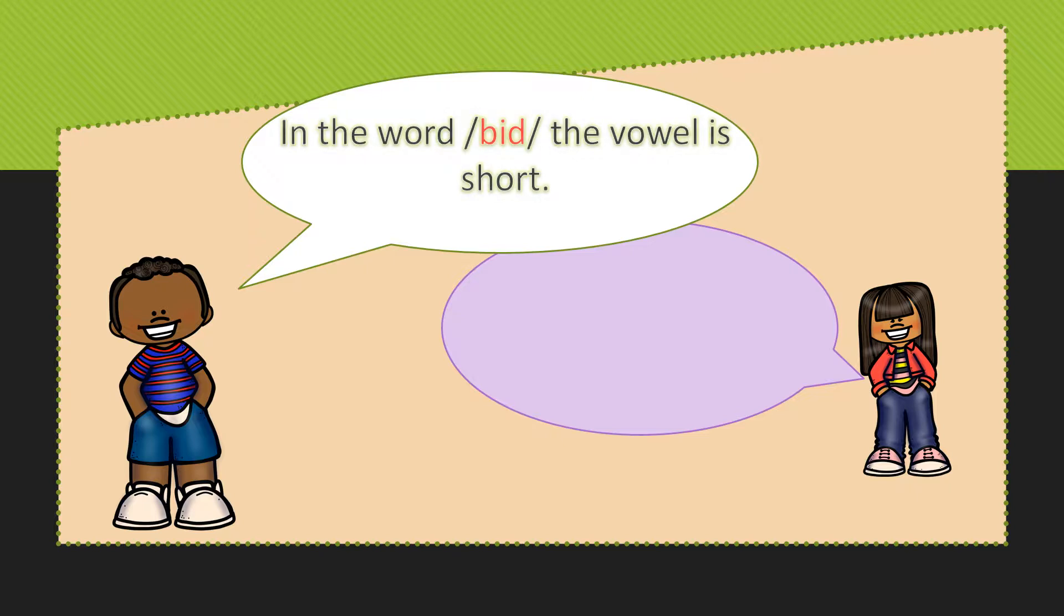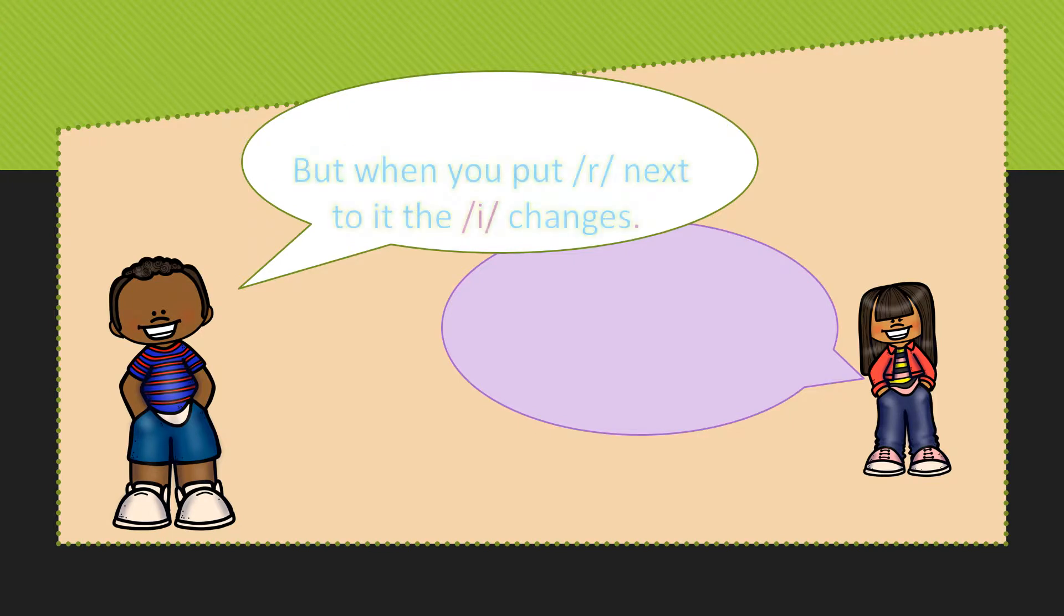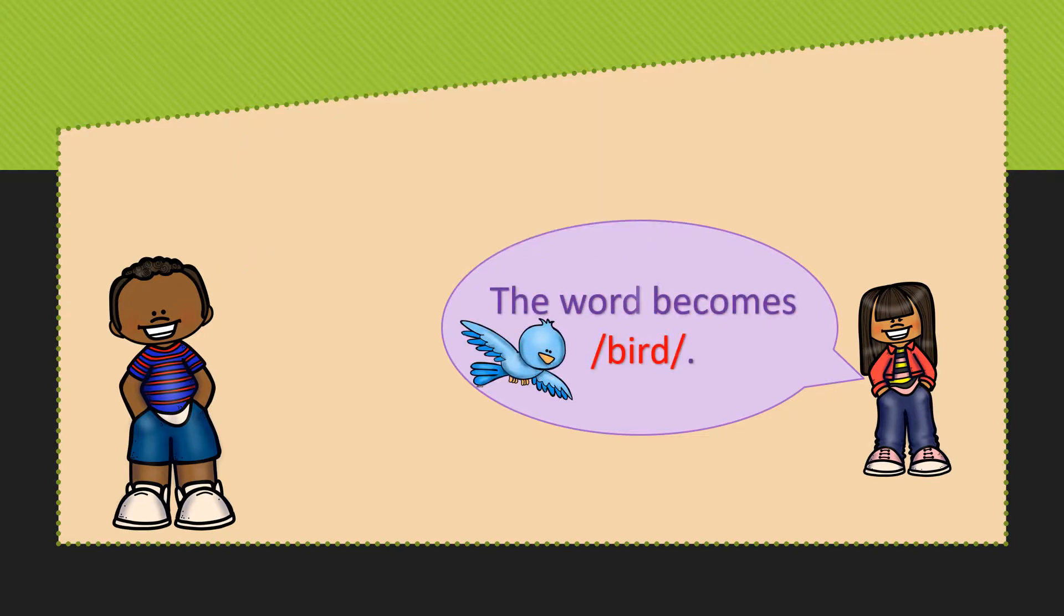In the word bid, the vowel is short, saying I, but when you put an R next to it, the I changes and the word becomes bird.